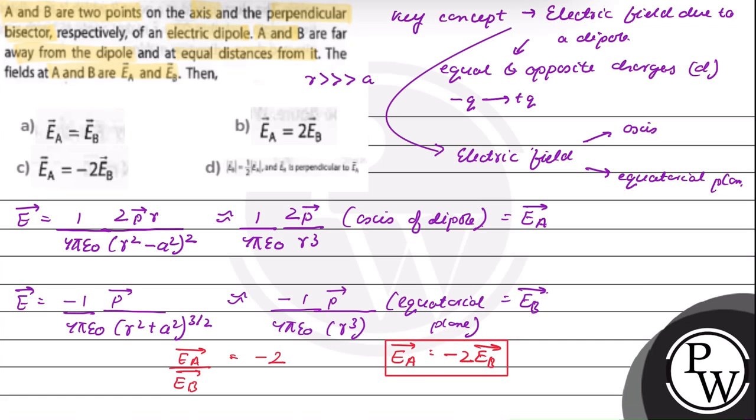The correct option is option C. Ea vector along the axis of the dipole is equal to minus 2 Eb vector, where Eb is along the perpendicular bisector, that is, in its equatorial plane.